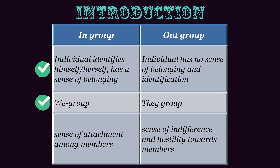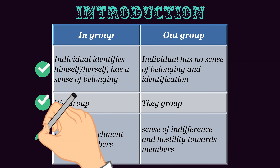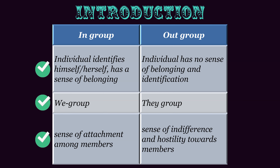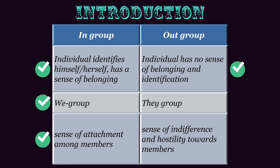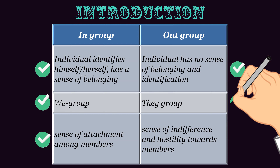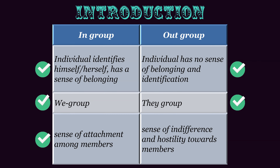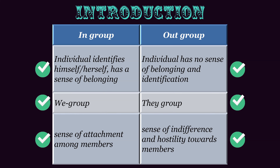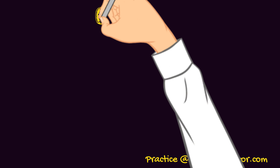The in-group is also the 'we-group' and there is a sense of attachment among the members. On the other hand, the out-group is the 'they-group' — the individual feels he has no sense of belongingness or identification. He does not identify with the group, and rather than attachment, there is a sense of indifference and hostility.